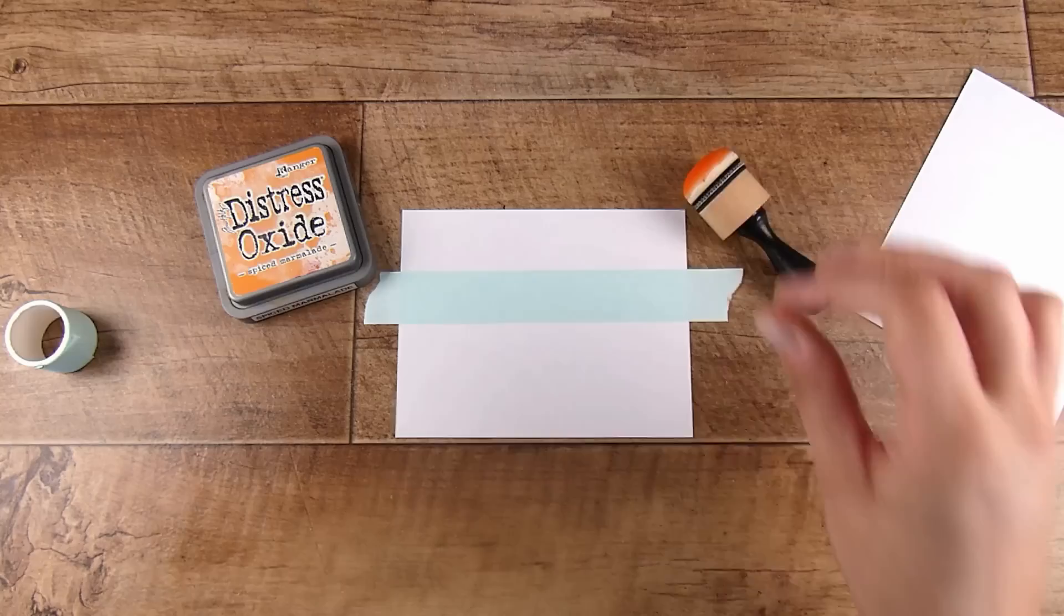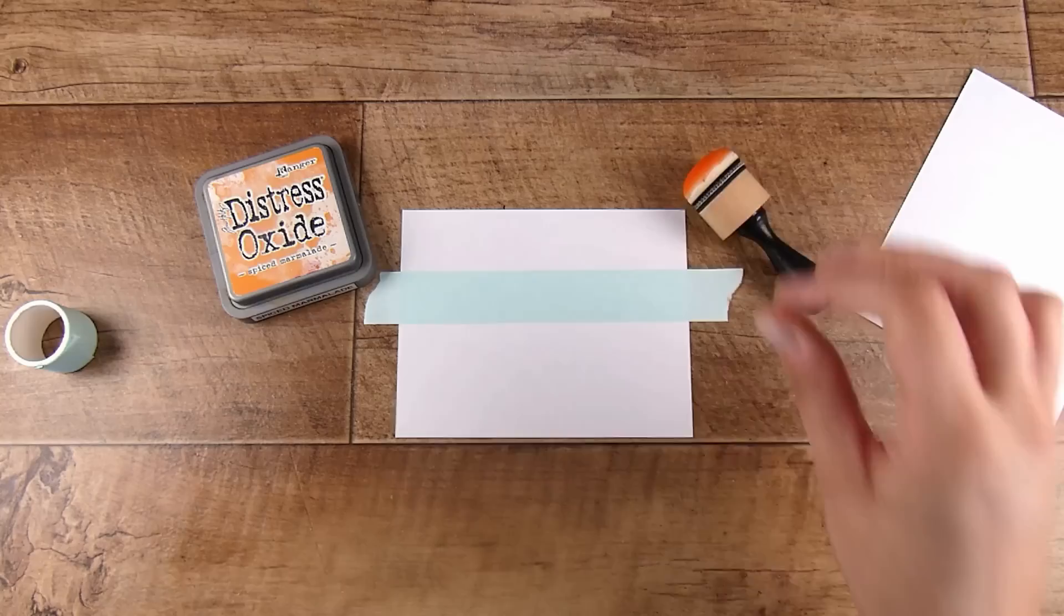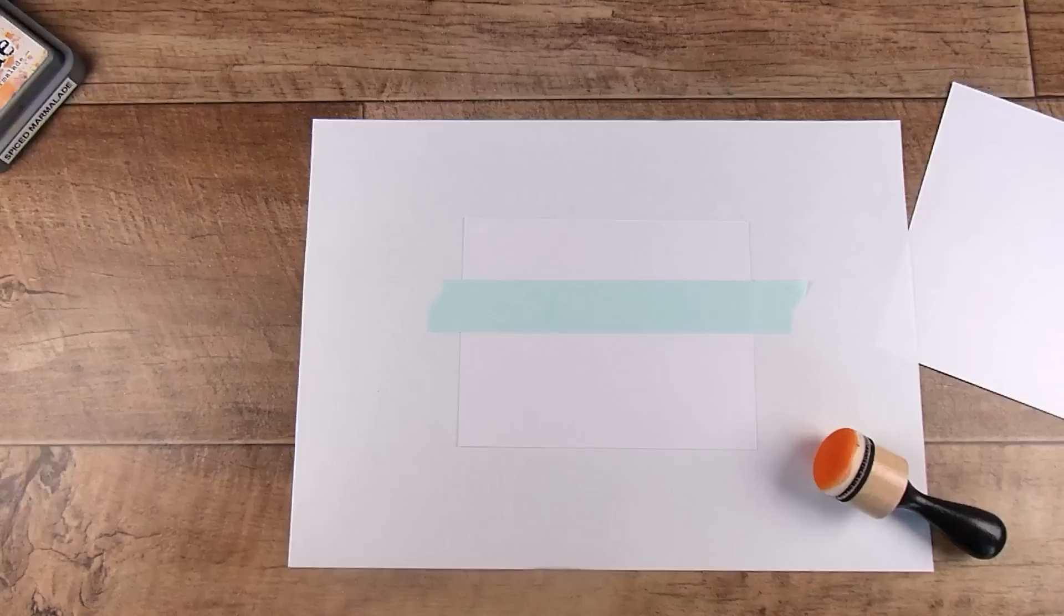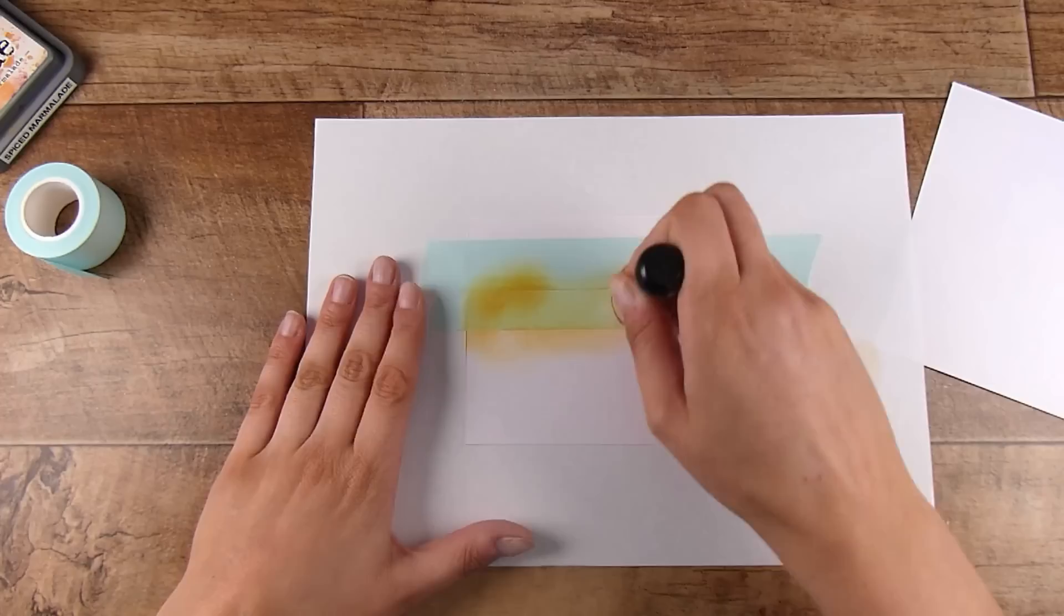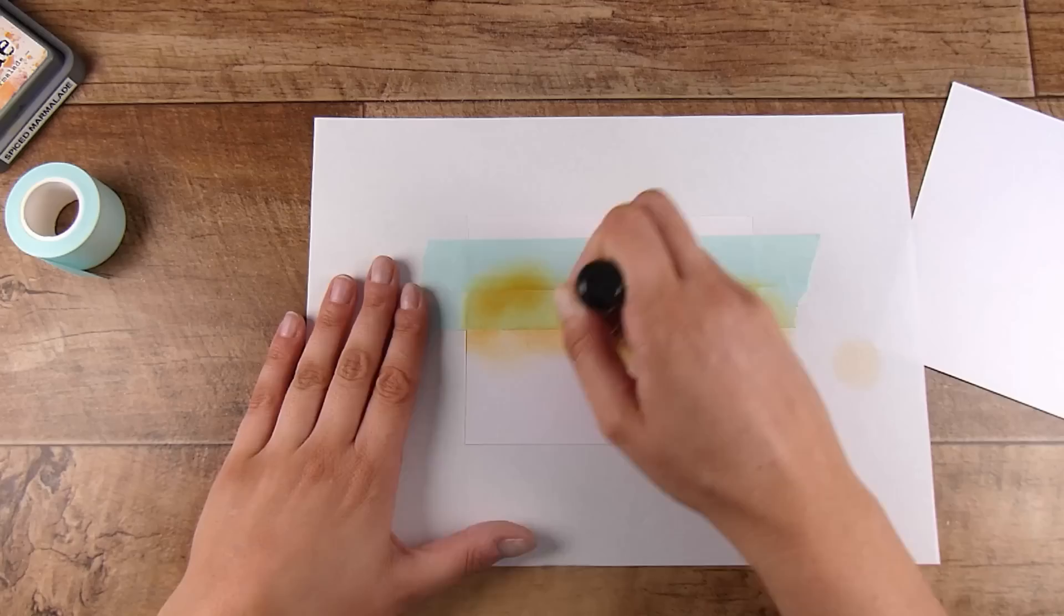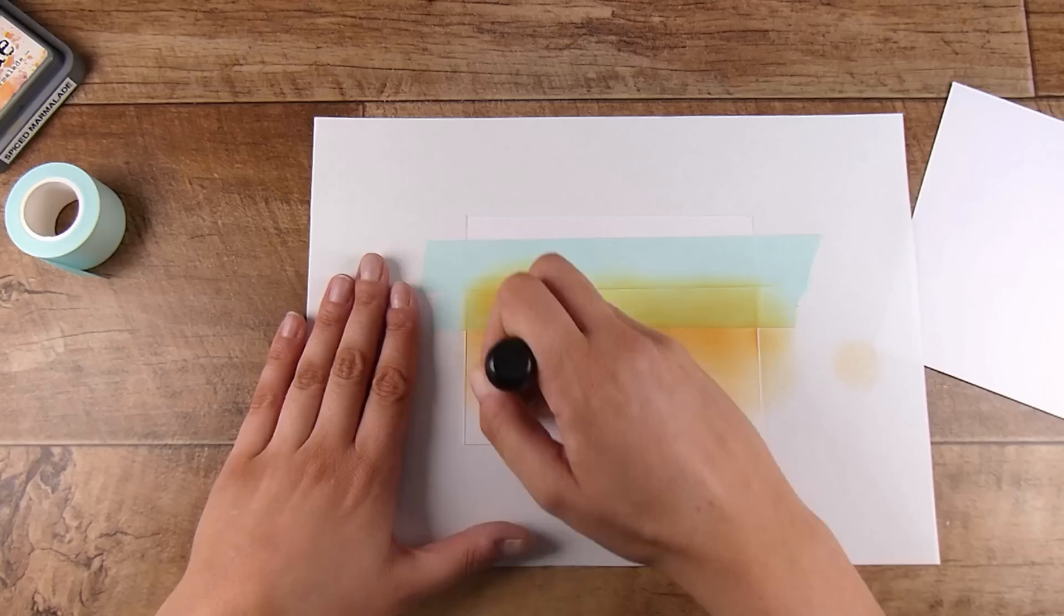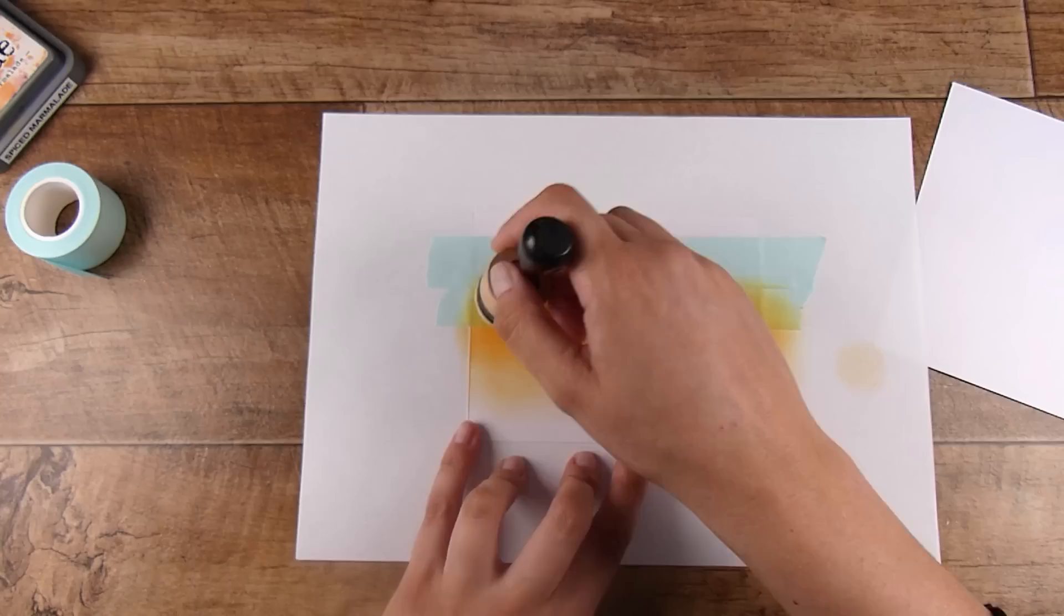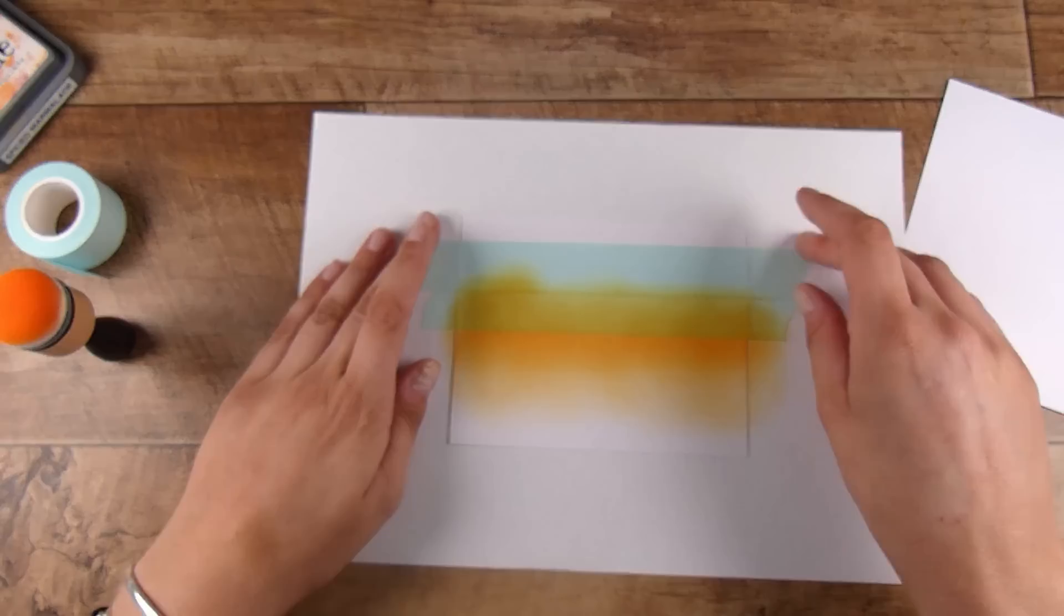I have embossing folders that create beautiful dimension. These cards could almost be one-color cards if you wanted. I'm choosing Spiced Marmalade Distress Oxide ink today, but you could use pigment inks, dye inks, watercolor washes, Tim Holtz Distress Crayons, watercolor pencils, acrylic paints, waxes, or the lunar paste from Simon Hurley watered down. Anything to get a nice gradient from heavier to lighter from the center of the page.